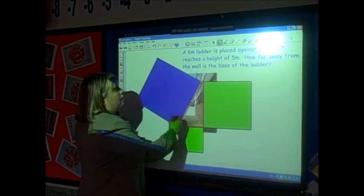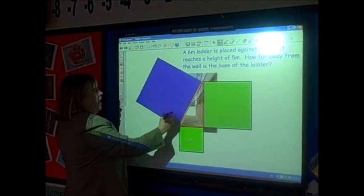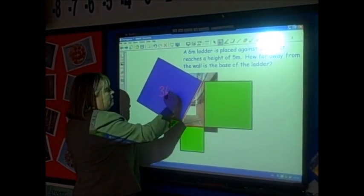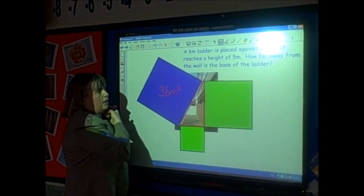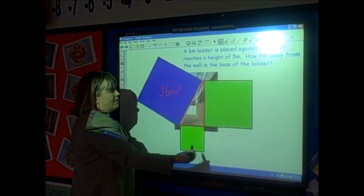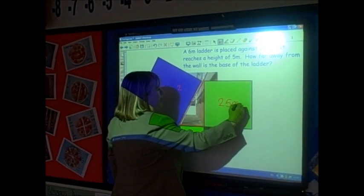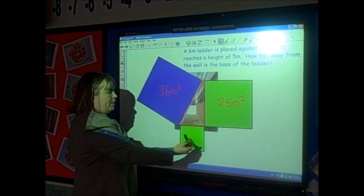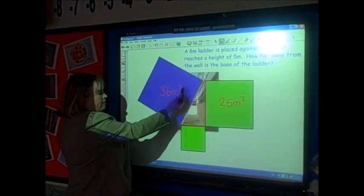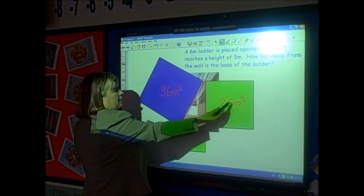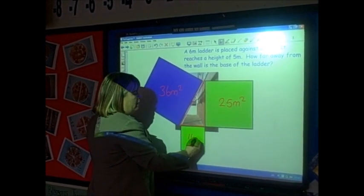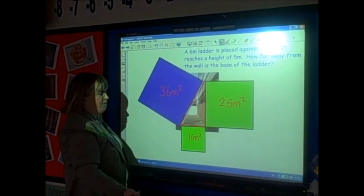If my ladder is 6 metres, then the area of this square is 36 metres squared. If the height of my wall is 5 metres, then the area of this square is 25 metres squared. Because the two smaller squares add up to make 36, then 36 take away the 25 tells me that this square must be 11 metres squared.